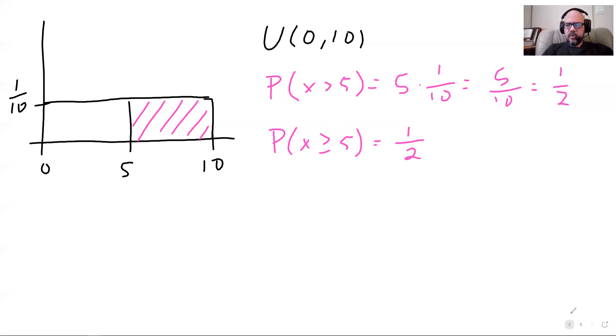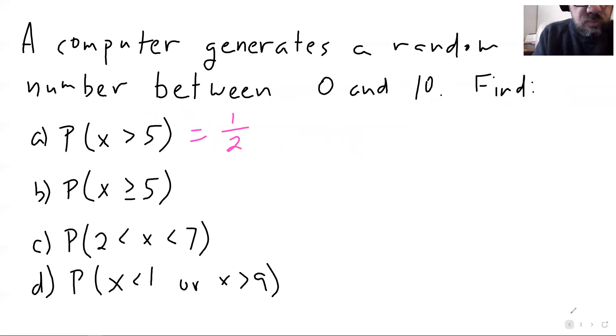Once you take calculus, specifically calculus two, you'd have a greater grasp of why this happens. But for now, we're just going to disregard it. The potential error there is so minuscule that we're going to ignore it. Greater than, greater than or equal to, effectively the same thing in continuous probabilities.